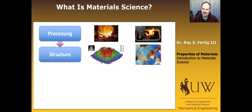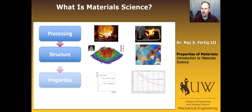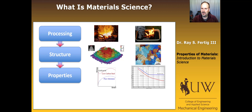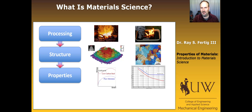The next facet we want to focus on after structure is properties. The processing influences the structure, and the structure influences the properties. Properties could be something like the yield point or the modulus. Some properties are more easy to tune than others — modulus is pretty much dictated by the material we choose, whereas yield strength, ultimate strength, or ductility are things we can control significantly with processing.